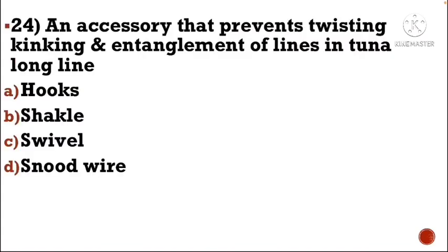Next question: An accessory that prevents twisting, kinking and entanglement of lines in tuna long line — Option A: hooks, Option B: shackle, Option C: swivel, Option D: snood wire.